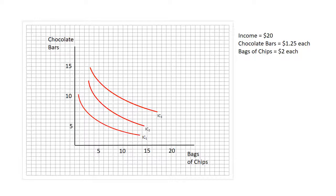We'll start with the assumption that this person has $20 to spend, that chocolate bars cost $1.25 each, and that bags of chips cost $2 each. This lets us draw the budget constraint on the graph.